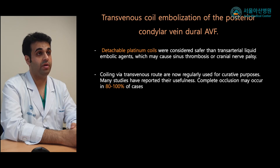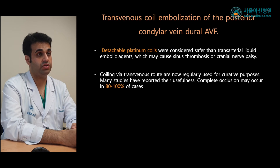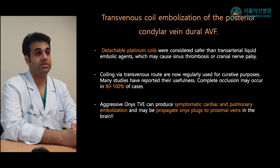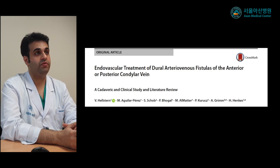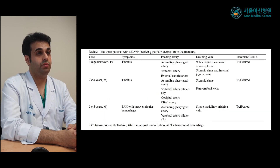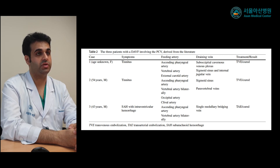Transvenous coiling is now regularly used for curative purposes, with studies reporting complete occlusion rates up to 100%. Aggressive transvenous Onyx embolization should be avoided as it can cause symptomatic cardiac and pulmonary embolism or propagate the Onyx plug to proximal veins in the brain. A literature review of endovascular treatment of posterior condylar vein dural AV fistula found three case reports: two used transvenous embolization with complete cure, and one patient with intraventricular and subarachnoid hemorrhage was treated with transarterial embolization and also completely cured.